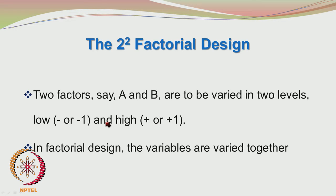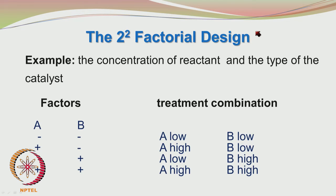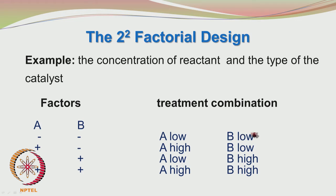We call the levels of these factors as minus or minus 1 and plus or plus 1. Lower level means minus 1, higher level means plus 1. For example, the 2 factors may be concentration of the reactant and the type of catalyst used in a reactor, and we are looking at the percentage conversion or yield. Minus-minus means both factors are at their lower levels; plus-minus means only A is at a higher level and B is at a lower level; minus-plus means A is at a lower level and B is at a higher level; plus-plus means both are at their high levels.